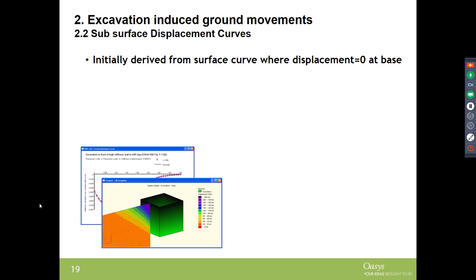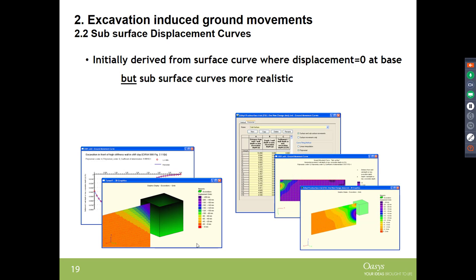Subsurface displacements are relevant when there are utilities below ground, a nearby basement, or a building below the surface. Initially XDISP modelled subsurface displacement simply dropping from the surface value to zero, but this was found to be unrealistic. In reality, there is a peak of movement at the base of the excavation — meaning settlements near utilities or adjacent basements would be under-predicted without accounting for this. It is important to be aware of this behaviour.